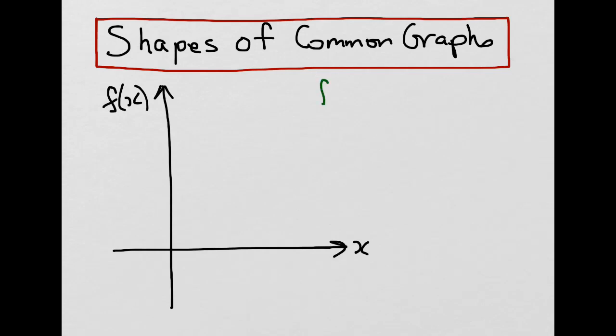For example, let's say we have f(x) = x. The exponent, if not shown, is 1 — we generally don't write it. That means we have a degree of 1, one possible solution, and one possible intercept. A graph with a degree of 1 will be a straight line.